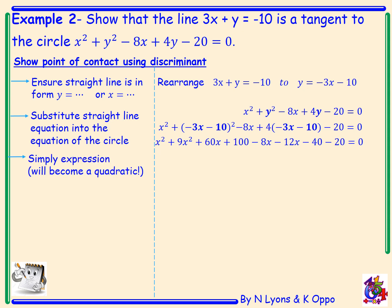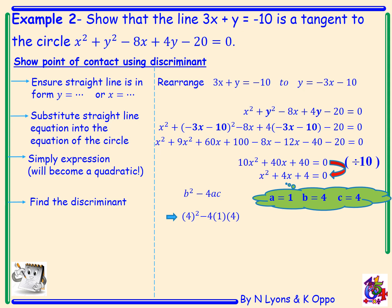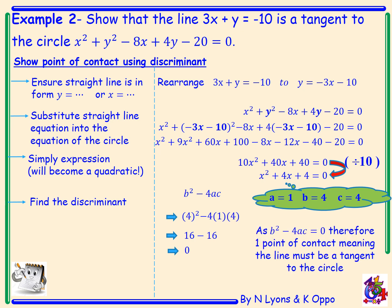We simplify the expression — it always becomes a quadratic: 10x squared plus 40x plus 40 equals 0. Dividing by 10 gives x squared plus 4x plus 4 equals 0. From there we use the discriminant to prove the line is a tangent. With a equals 1, b equals 4, and c equals 4: b squared minus 4ac equals 4 squared minus 4 times 1 times 4, which is 16 minus 16 equals 0. Since b squared minus 4ac equals 0, there is one point of contact, meaning the line must be a tangent to the circle.